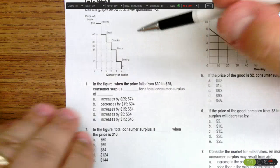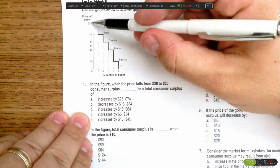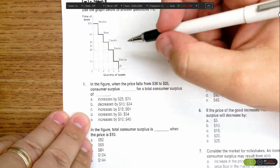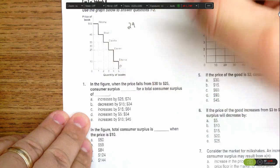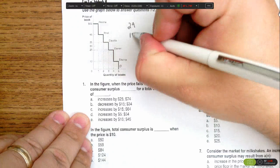So if the price is $30, then Alicia was willing to pay $59, she only has to pay $30. So for her, there is a consumer surplus of $29. Brad was willing to pay $45, but he only has to pay $30, so he has a $15 consumer surplus.